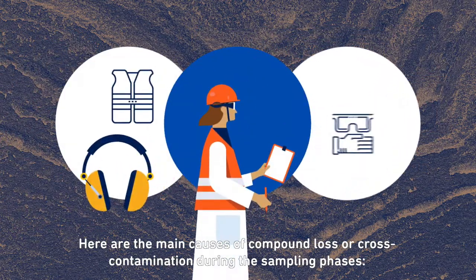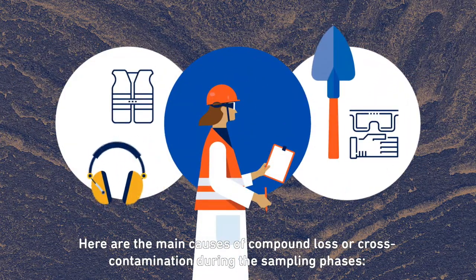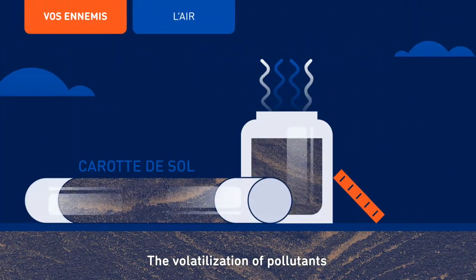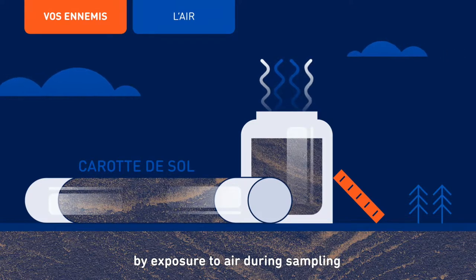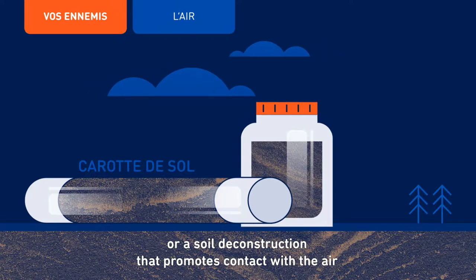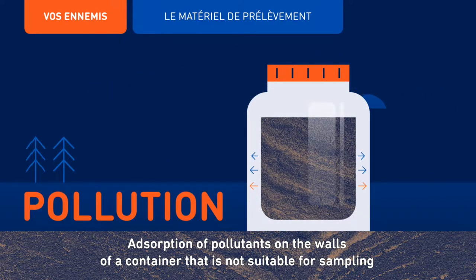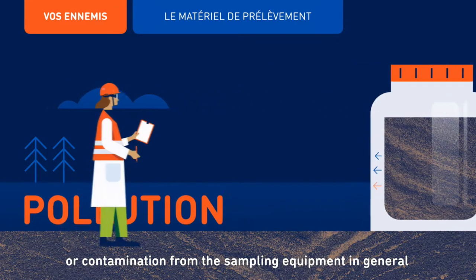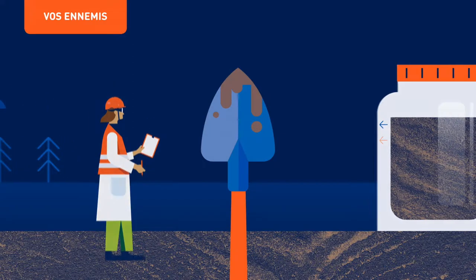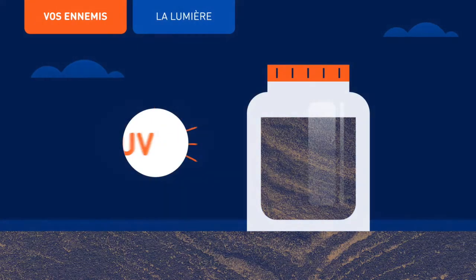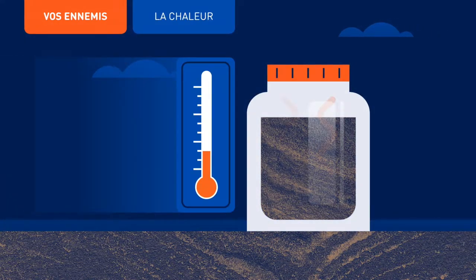Here are the main causes of compound loss or cross-contamination during the sampling phases: the volatilization of pollutants by exposure to air during sampling, or soil deconstruction that promotes contact with the air; adsorption of pollutants on the walls of an unsuitable container, or contamination from sampling equipment; physical and photochemical transformations due to light exposure; heat; and time.